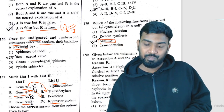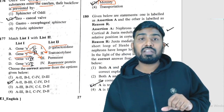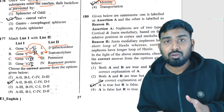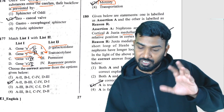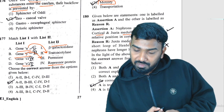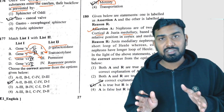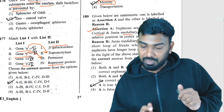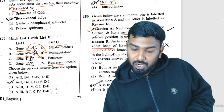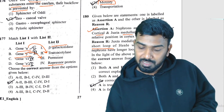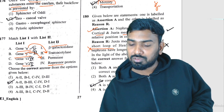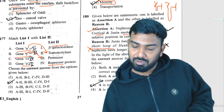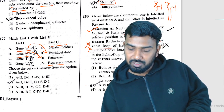Question 180: nephrons are of two types — cortical and juxtamedullary — based on their relative positions in the cortex. Assertion is correct. But the reason says juxtamedullary nephrons have a short loop of Henle — that is wrong. Juxtamedullary nephrons have a longer loop of Henle; cortical nephrons have a short loop. So assertion is true but reason is false.